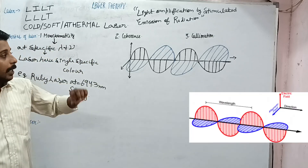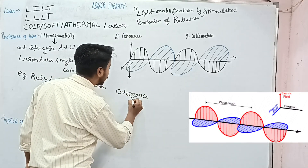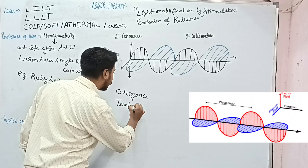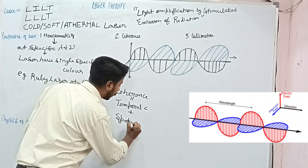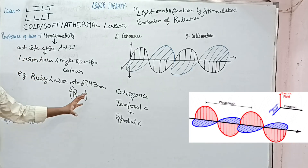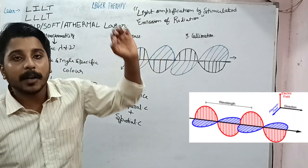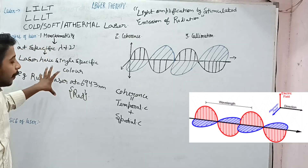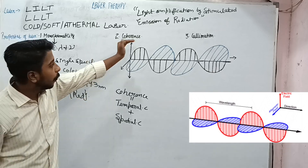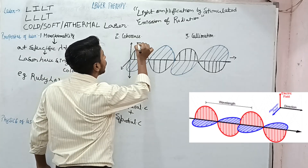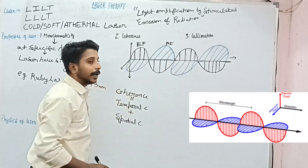Next is coherence — this is very important. Coherence can be of two types: temporal coherence and spatial coherence. Now focus on the diagram. The black wave represents the electric field and the blue wave represents the magnetic field. As you may have studied in 12th class, both are perpendicular — the electric field goes upward and the magnetic field goes outward toward yourself, making a 90-degree angle.